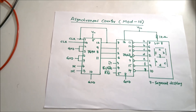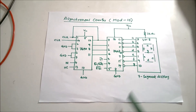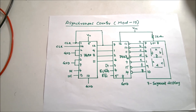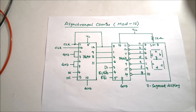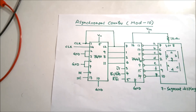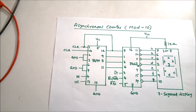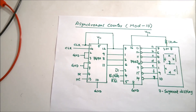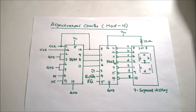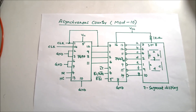This experiment is all about asynchronous counters. The circuit diagram uses the 7490, which is a decade counter that produces a binary output at pins 12, 9, 8, and 11. These are the output bits in binary, and we need to display them on a 7-segment display using the 7447 IC.